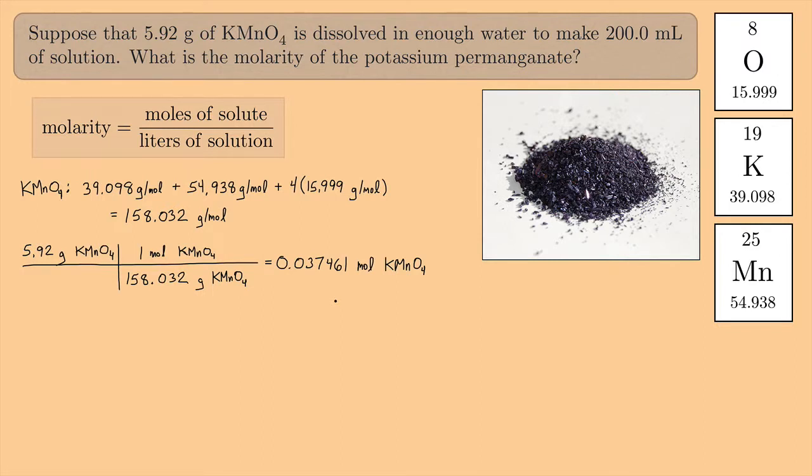For the denominator, I need the liters of solution. Well, I have 200 milliliters of solution. And I want to convert that to liters of solution. And I know that in one liter, there are 1,000 milliliters. So if you do this conversion, you end up getting 0.2000 liters. You keep the same number of significant figures.